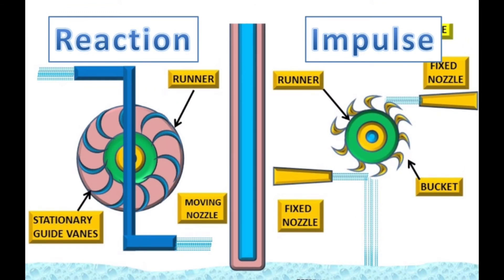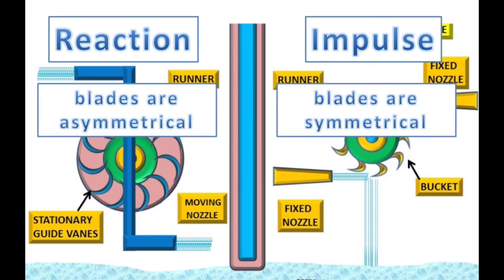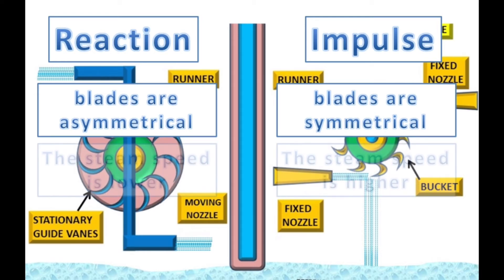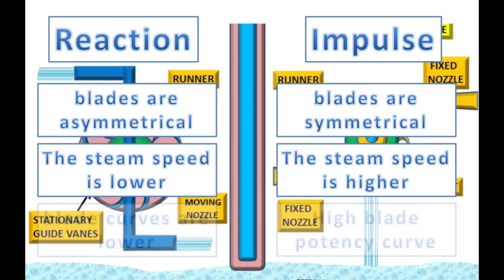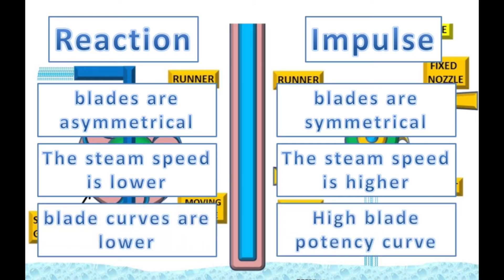Here's a quick highlight of the distinctions between impulse and reaction turbines. The blades of the impulse rotor are symmetrical in form due to their shape and size similarities, while the reaction blades are asymmetrical in form due to blade sizes and design differing at every stage. The steam speed in the impulse turbine is higher, while in the reaction turbine the steam speed is lower. Also, the impulse steam turbines have a high blade efficiency curve, while the reaction turbine blade efficiency is lower.